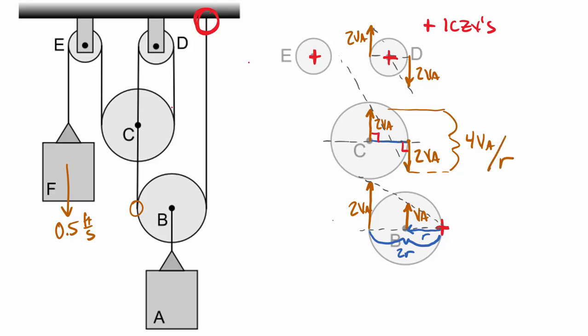And so thinking about how much more will change the velocity as we move over here to this left side, we started at 2VA, right, that's right here. And then we have a change of the same change here, 4VA over 1 radius. And so this would be 2VA plus 4VA. So total here will be 6VA. Okay, so 6 times the velocity of A will be the cable velocity on this left edge.